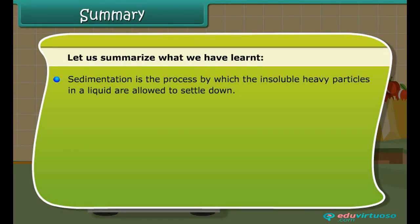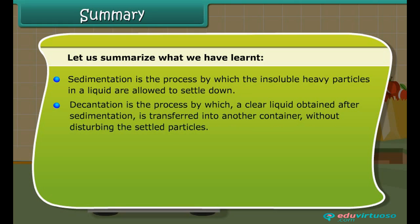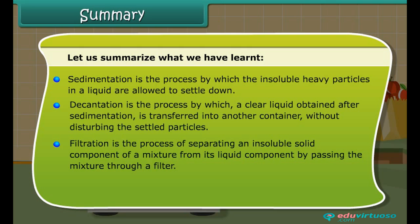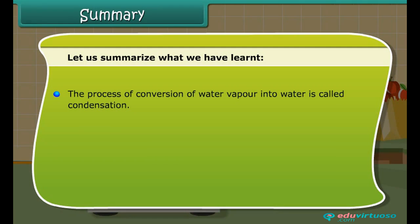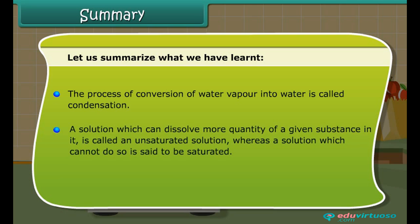Sedimentation is the process by which the insoluble heavy particles in a liquid are allowed to settle down. Decantation is the process by which a clear liquid obtained after sedimentation is transferred into another container without disturbing the settled particles. Filtration is the process of separating an insoluble solid component of a mixture from its liquid component by passing the mixture through a filter. The process of conversion of water into vapor by heating is called evaporation. The process of conversion of water vapor into water is called condensation. A solution which can dissolve more quantity of a given substance in it is called an unsaturated solution, whereas a solution which cannot do so is said to be saturated.